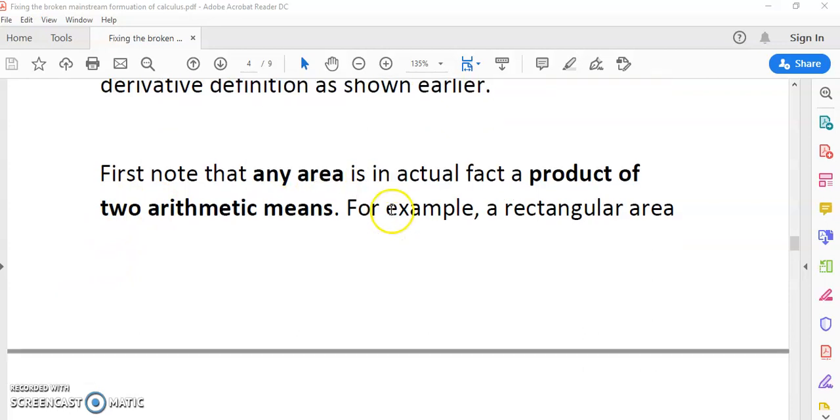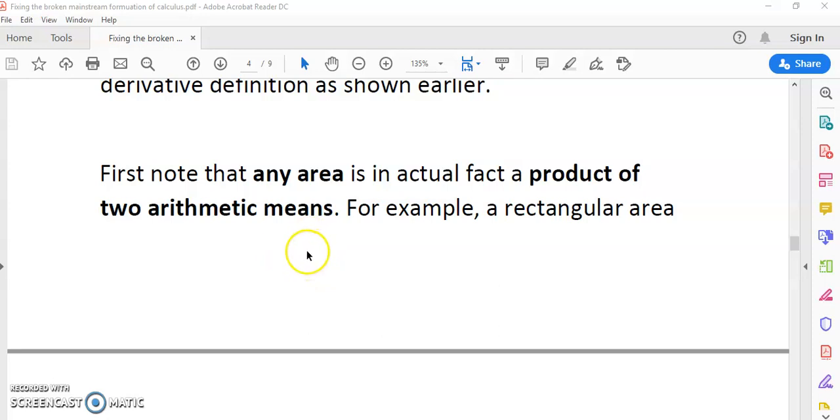You can judge for yourself. In any case, the first stage in this process is to note that any area, even in your mainstream calculus, is in actual fact a product of two arithmetic means. You've never learned it that way. For example, you've learned about Riemann sums and the limit of Riemann sums and also about indefinite integrals, but none of that is well-formed knowledge. Any integral, indefinite integration excluded, is a product of two arithmetic means.